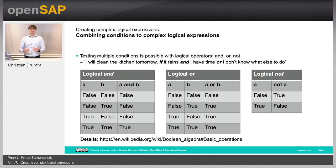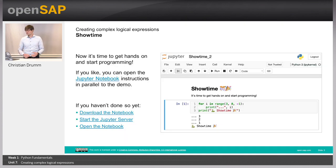There you have a detailed introduction. What we will be doing is looking at how to use these operators in Python code. So, it's showtime again. Let's switch over to the notebook and we'll see how to use AND, OR, and NOT in Python code.